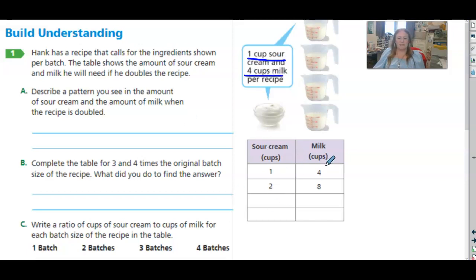This table shows us the milk if he doubles, and the sour cream if he doubles the recipe, right? We times by two, times by two, equivalent ratios.